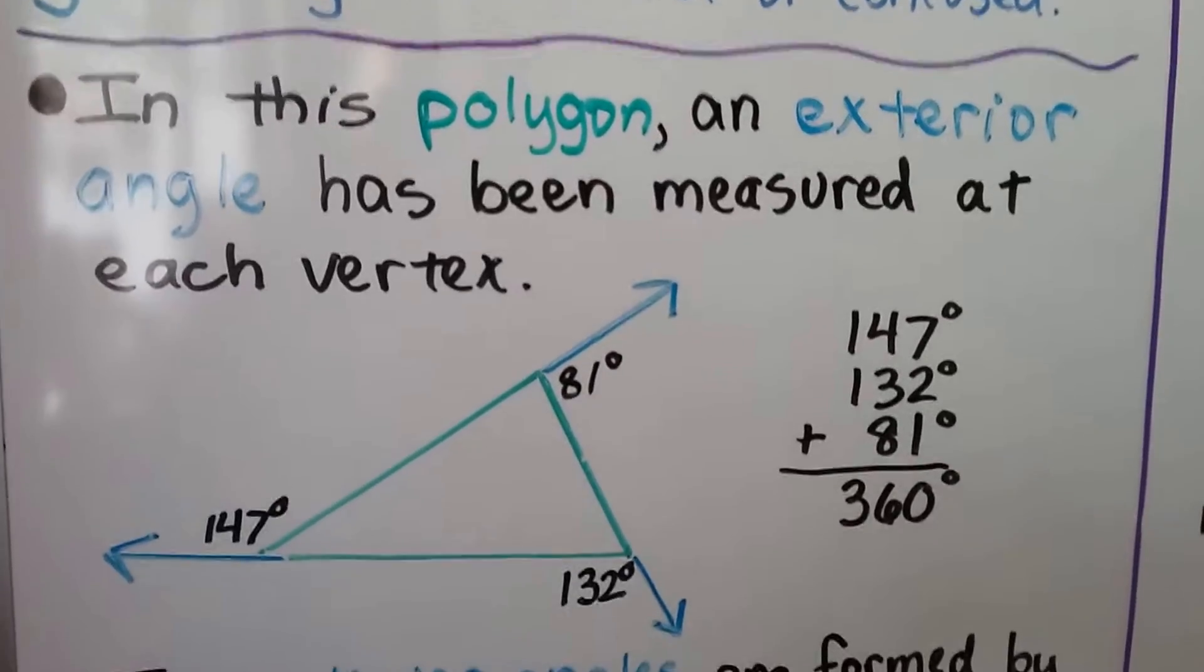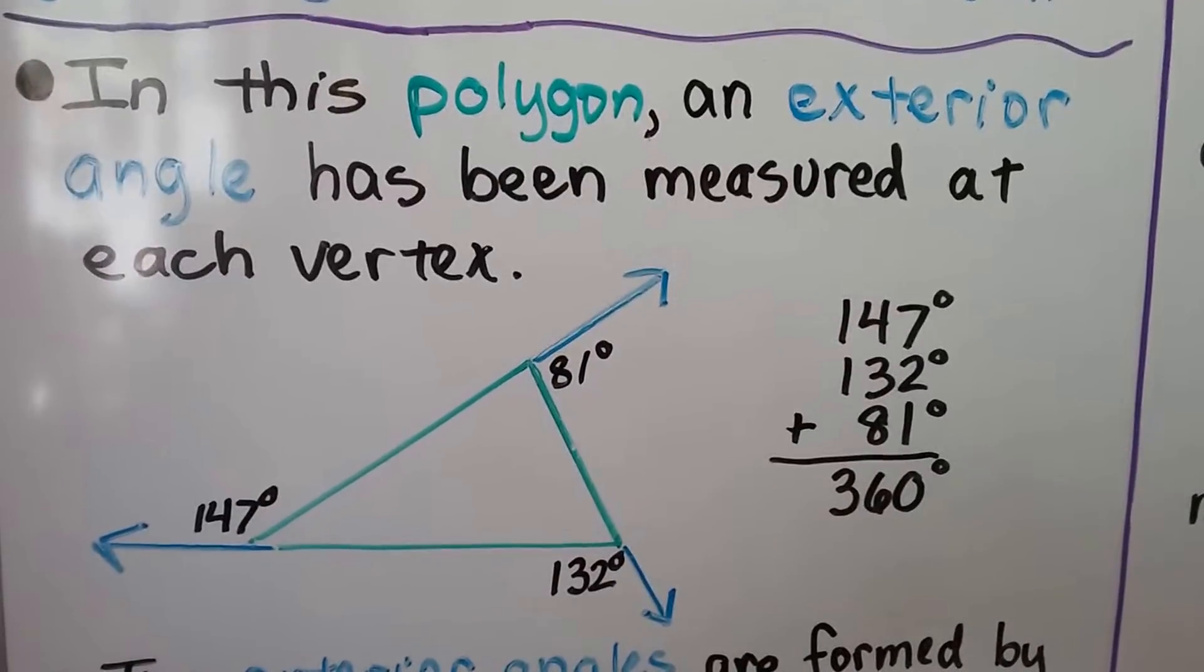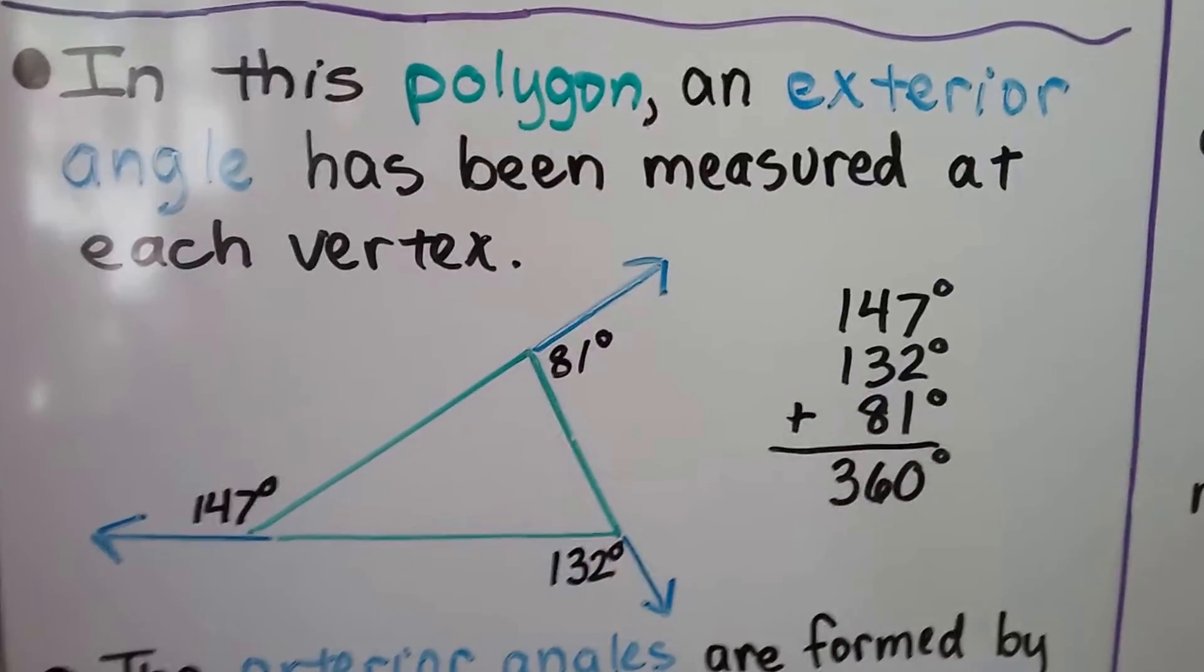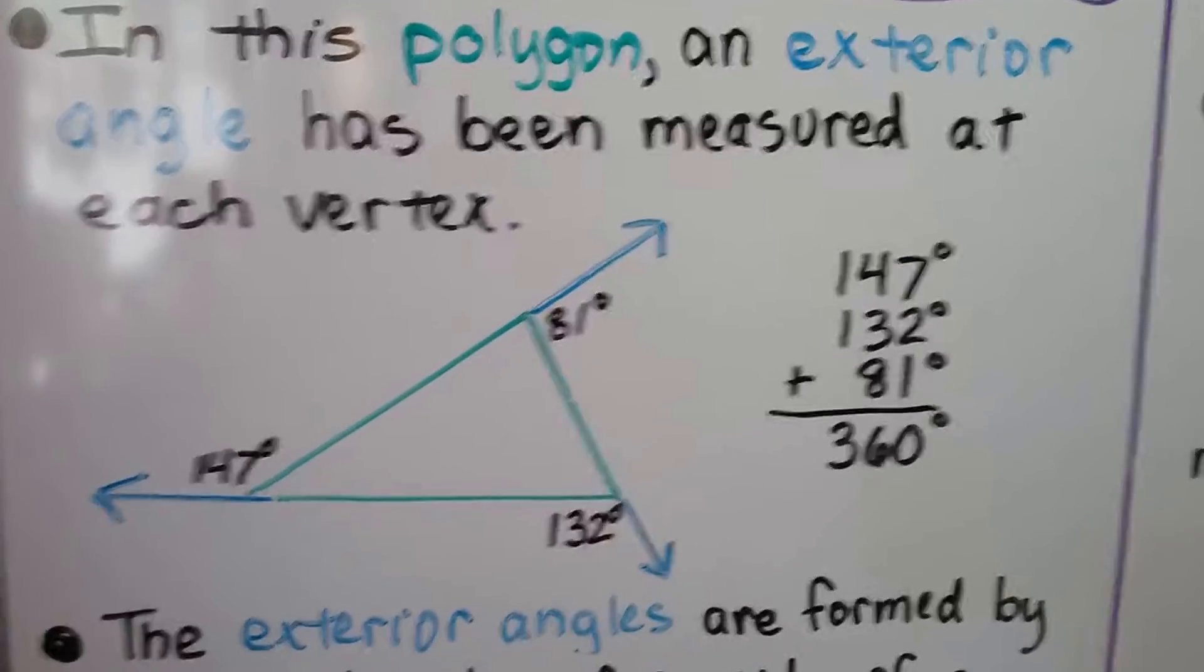In this polygon, an exterior angle has been measured at each vertex. If we add them up, we have 147, 132, and 81. We get 360 degrees.